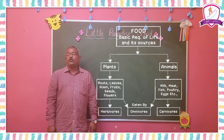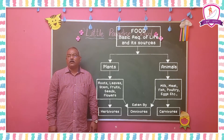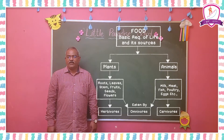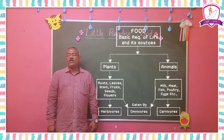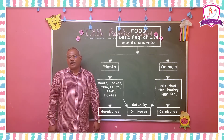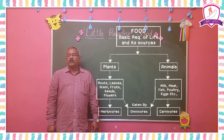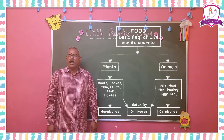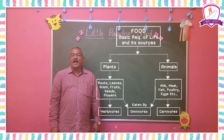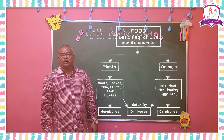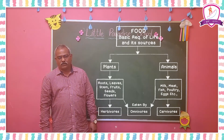Animals that eat only plants are herbivores. Animals that eat only animals are carnivores. Animals that eat both plants and animals are omnivores.